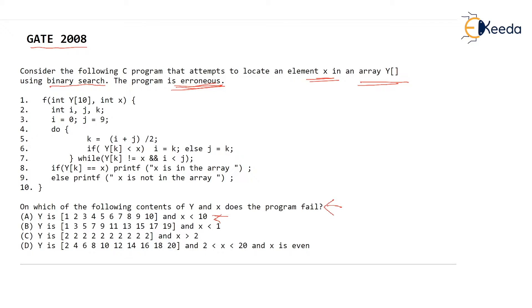Maybe it will go in an infinite loop, maybe it will not search a value properly — whatever the reason, the function is erroneous. The way to check the answer to this question is to actually run this binary search function on paper using pen and paper on each of these examples.